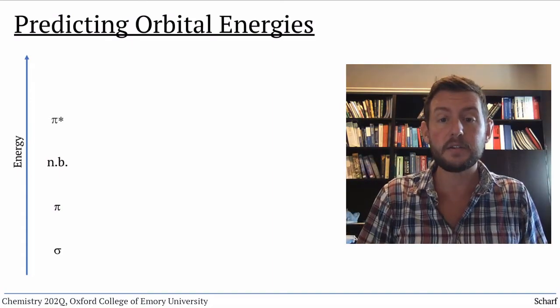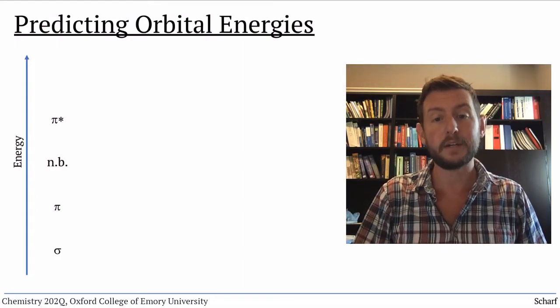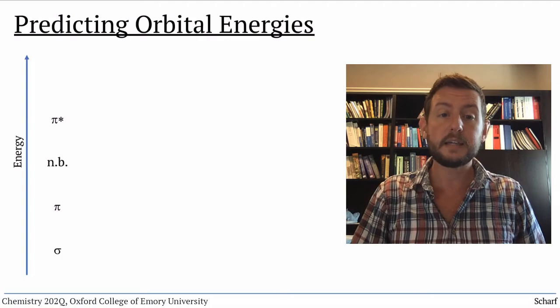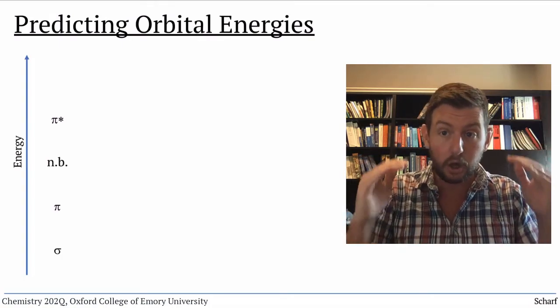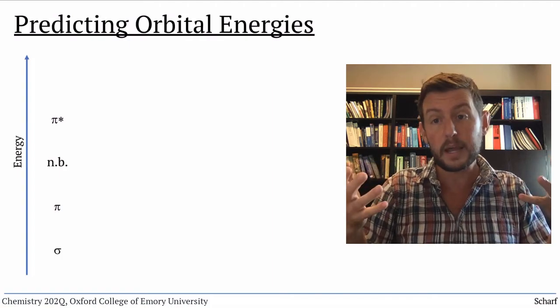Next higher in energy are the pi star antibonding orbitals that correspond with the pi bonding orbitals. These antibonding orbitals are relatively low in energy, because it doesn't take very much energy to break a pi bond.